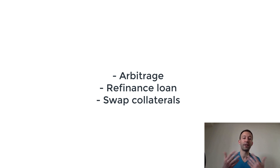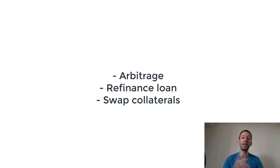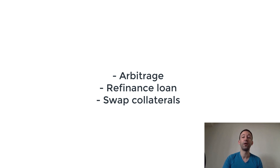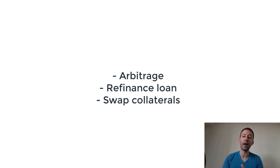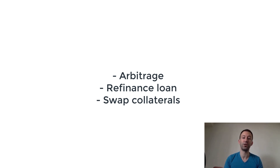You can also refinance loans. For example, if you have a loan on Compound at maybe 10% and you notice that it's also possible to have the same loan at 5% with another lending protocol, you borrow a token with a Flash Loan, reimburse your loan on Compound, then open the loan at 5%, and with that money you reimburse the Flash Loan.